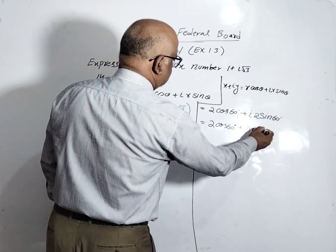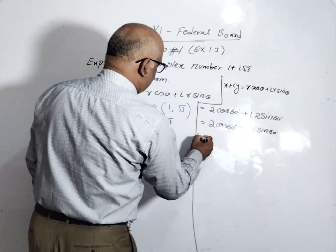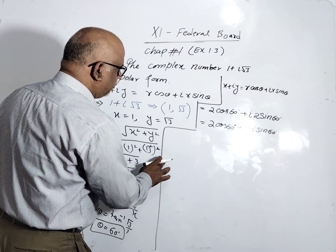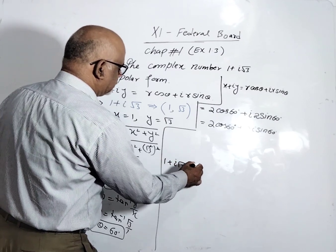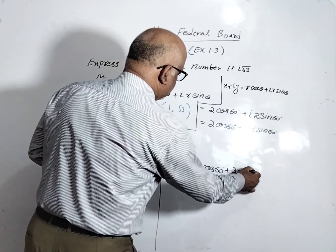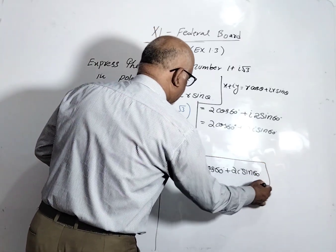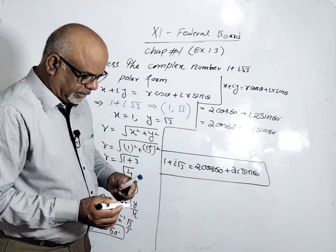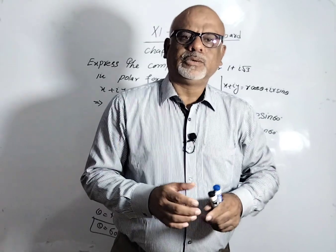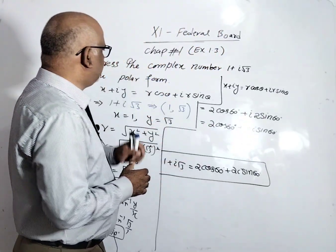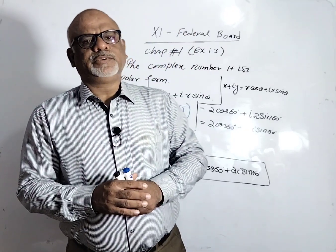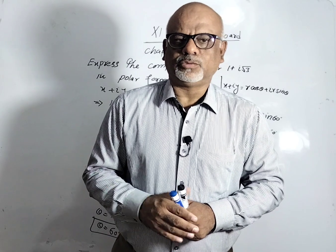So the polar form of 1 + i√3 is 2 cos 60° + 2i sin 60°. In this lecture — Chapter 1, Exercise 1.3 — we discussed what is the polar form and converted a complex number into polar form. If you like this video, please share it and subscribe to my channel. Thank you so much. Allah hafiz.